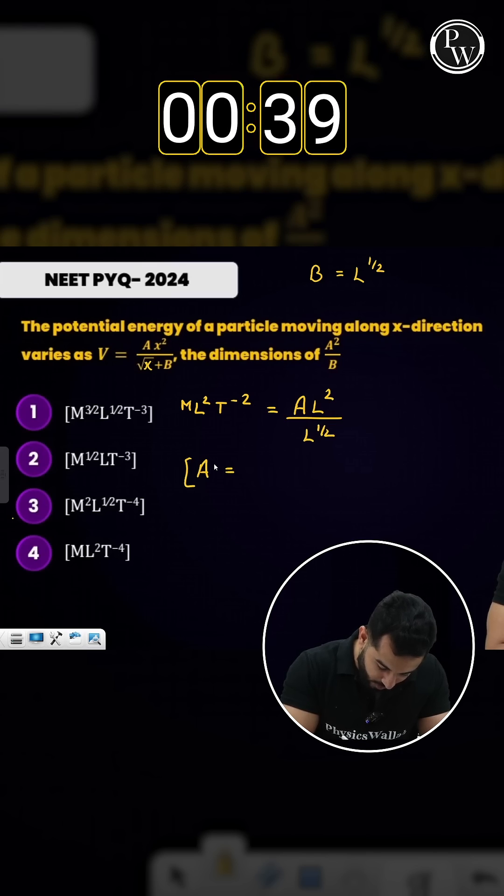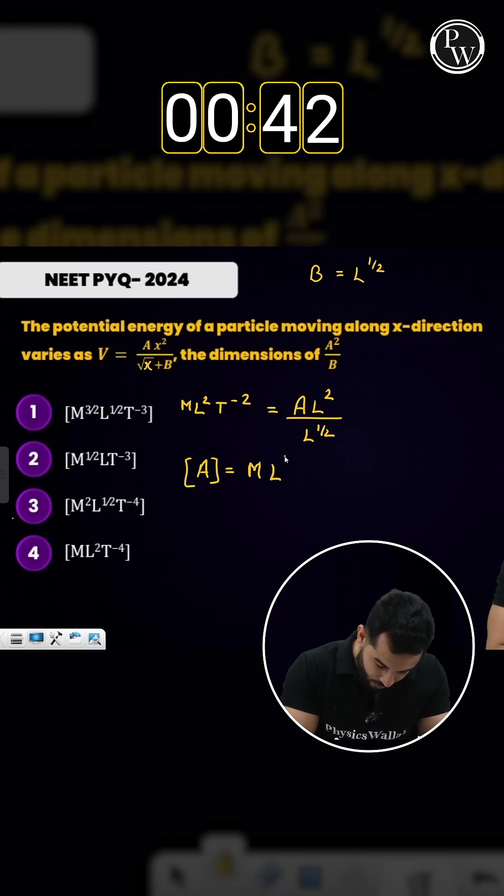Dimensional formula of a as M L^(1/2) T⁻². So that means a squared will be M² L T⁻⁴.